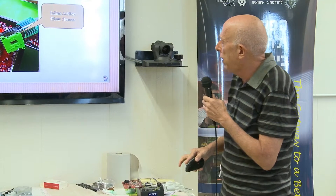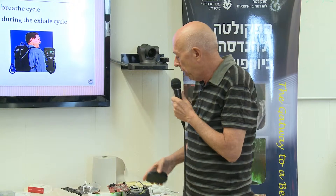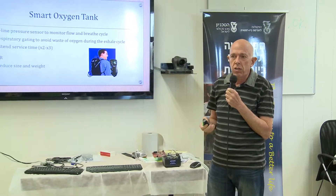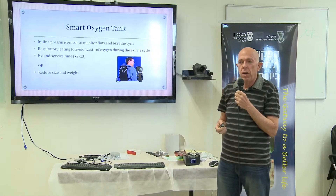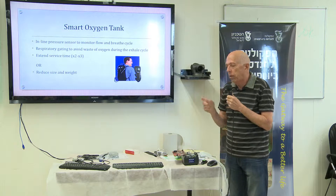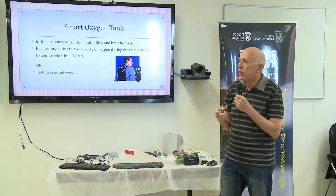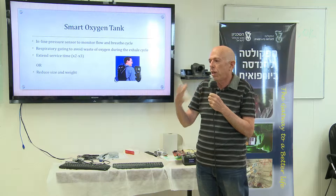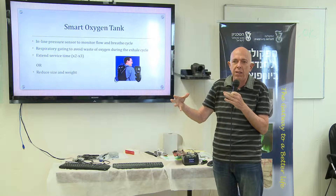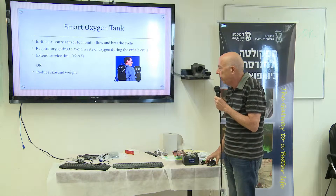This is the inline add-on flow sensors concept. A similar approach with a smaller sensor can be done with standard oxygen devices, and can actually make them smarter. Besides putting alerts, it can also measure the breath cycle — the exhale and inhale — and since there is a waste of oxygen during the exhale cycle, we can either prolong the service time of a given tank, or make the tank more mobile, friendly, and smaller for people who need them on the go.